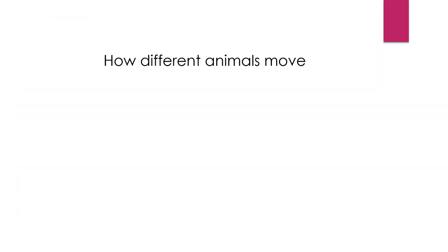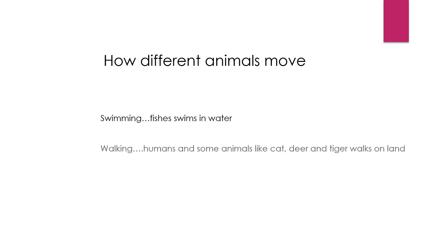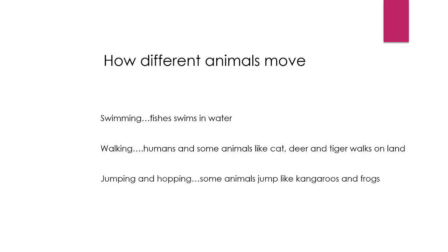How different animals move. First is swimming — fishes swim in water. Walking — humans and some animals like cats, deer, and tiger walk on land. Jumping and hopping — some animals jump like kangaroos and frogs. Flying — birds and bats fly in the air.